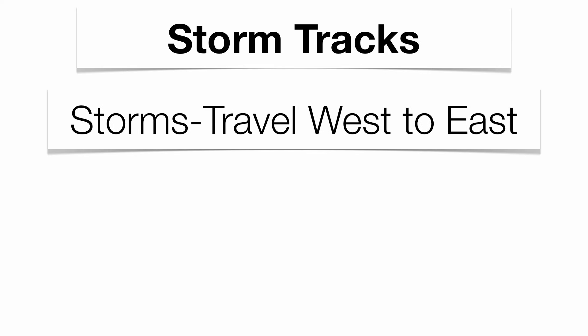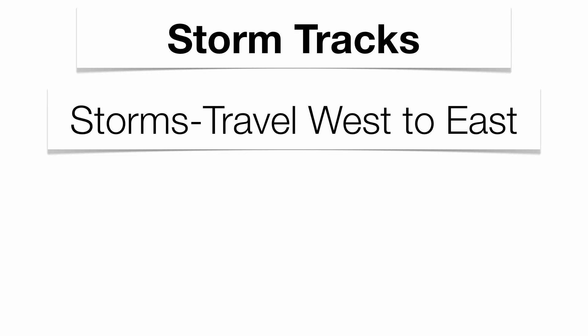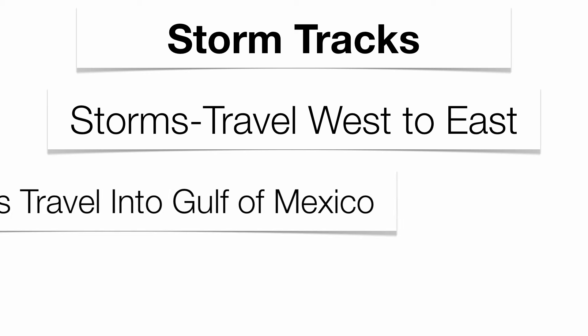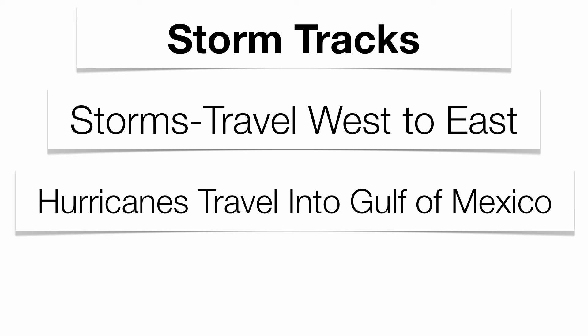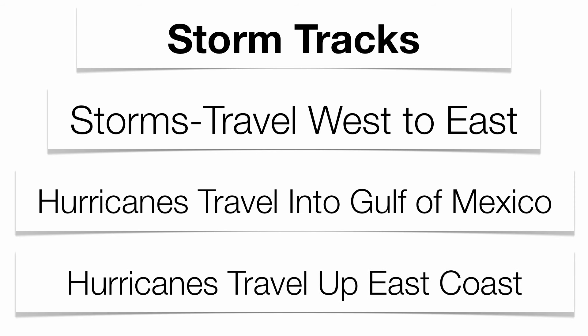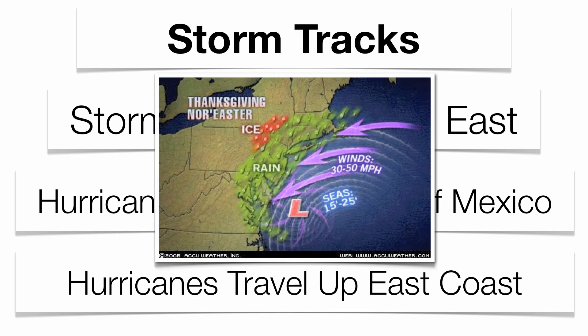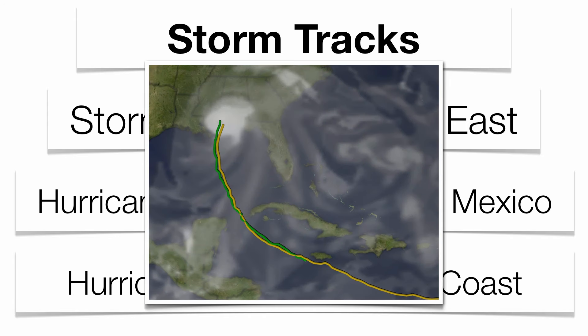This leads us into storm tracks, which are essentially influenced by what we call the westerly wind belt. All of our storms on the planet essentially travel from west to east because the jet stream itself travels from west coast to east coast counterclockwise around our planet. Hurricanes, for instance, are going to take a typical storm track — they're either going to enter into the Gulf of Mexico or travel up the east coast. Storms that travel west to east across the United States are called mid-latitude cyclones. Hurricanes form in the southern Atlantic Ocean and travel toward the United States. There's also the typical storm track of a low-pressure center called a nor'easter as it travels up the east coast.